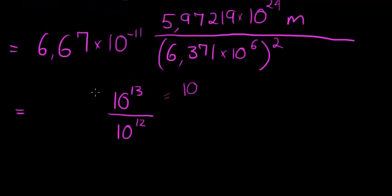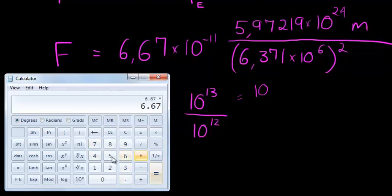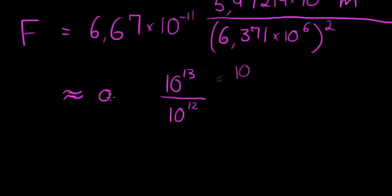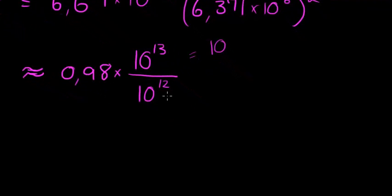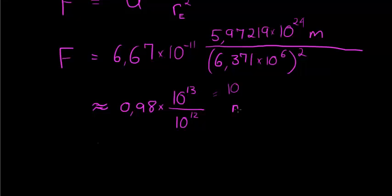Now, what will the coefficient be? We have 6.67 times 5.97219 divided by 6.371 squared. It gives me 0.98. I'm going to round two decimal places. So if we round it, we get 0.98 times this part, which we said is equal to 10. So the comma just moves one space, and we still have that mass there as well. So we have all the numbers simplified to simply 9.8 times mass.